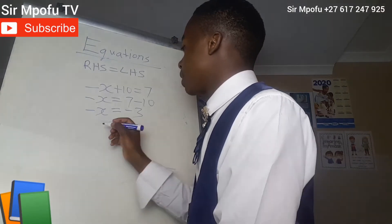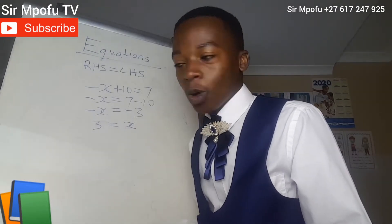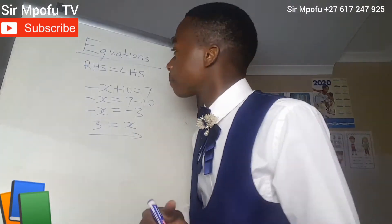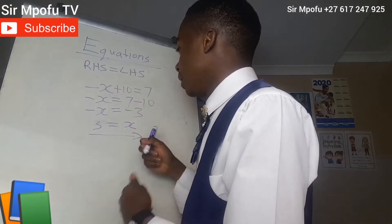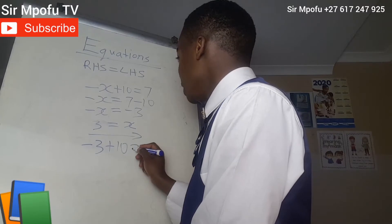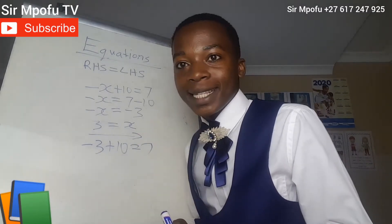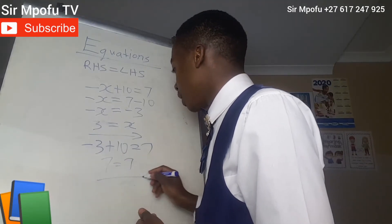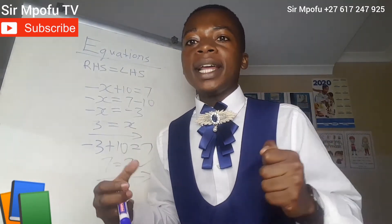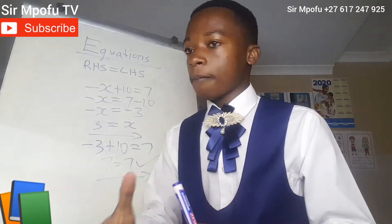You are going to take 3 and it comes to this side — it will be positive. Then x, if it goes to the other side, it will be positive as well. Your answer will be x equals 3. Let's prove it: minus 3 plus 10 must equal 7. Minus 3 plus 10 is 7. 7 equals 7 — proved. Every mathematical question can be proved.